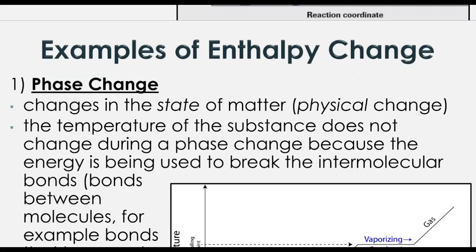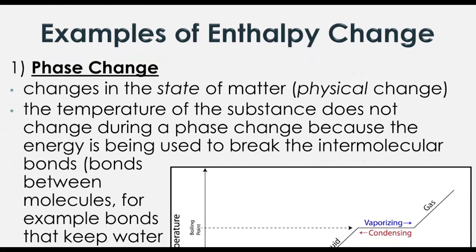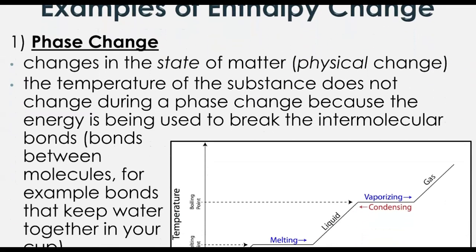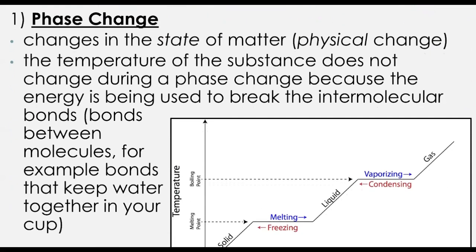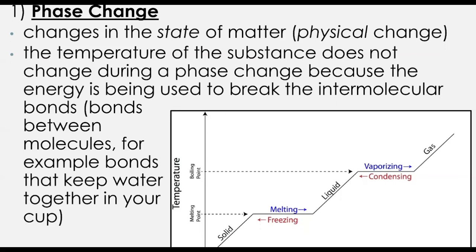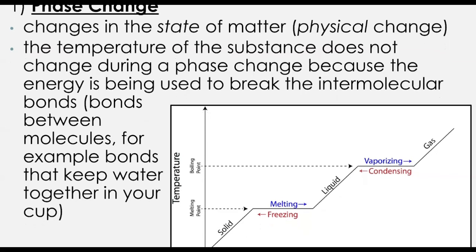So that's looking at where that energy goes. We have three examples of where we can look at enthalpy changes happening. The first one is a phase change — looking at something changing states of matter, basically changing between solid, liquid, and gas.